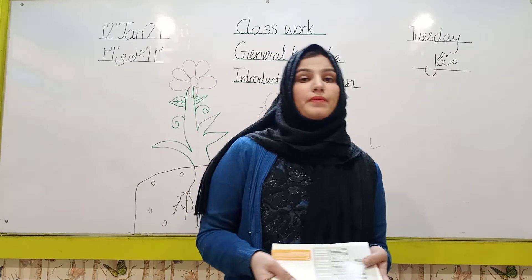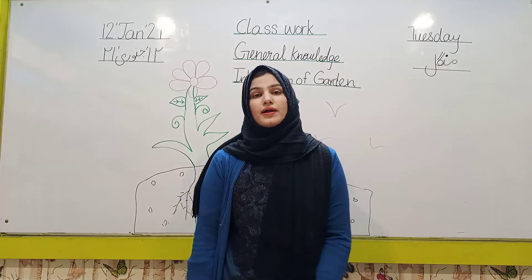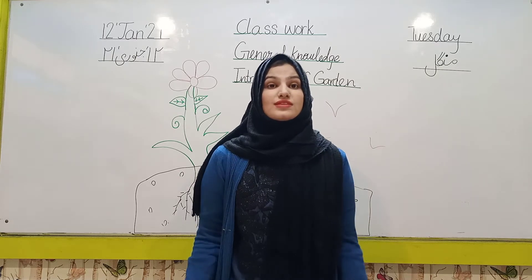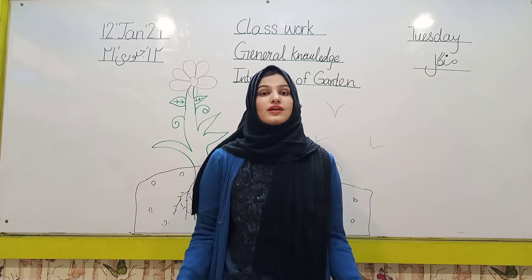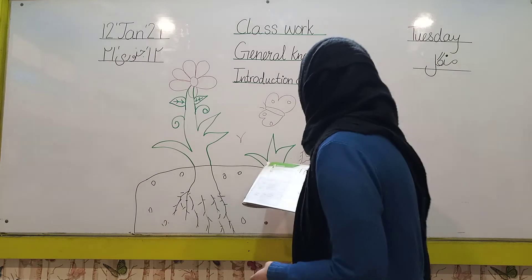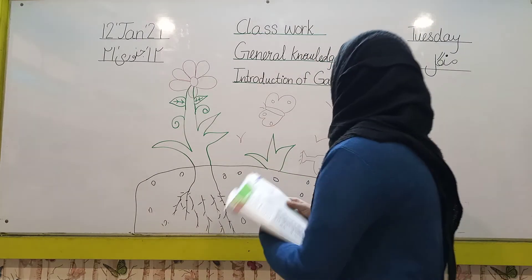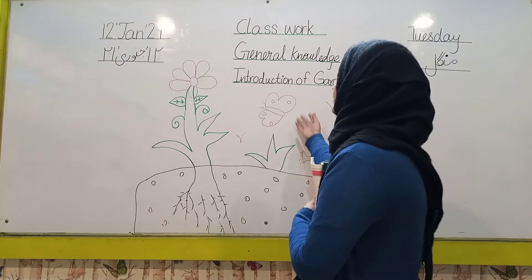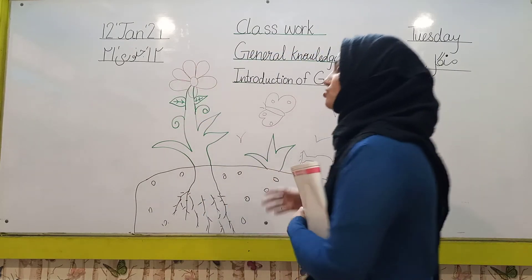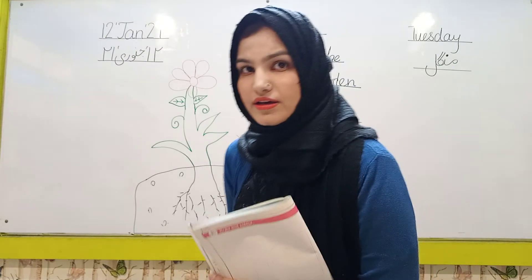There are many birds in the garden and there is grass in the garden. The color of the grass is green. In the picture, the color of the garden is green. The color of the butterfly is red. The color of the flower is red. There are so many kinds of flowers in the garden.